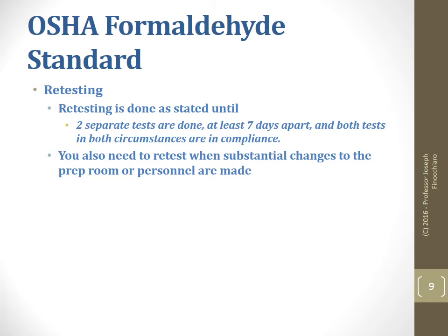When we retest, we must retest once within six months or 12 months respectively. When we have two tests done at least seven days apart — a week apart — and both tests are in compliance, we are now in compliance. So if we do a test on Monday and both the time-weighted average and short-term exposure limit show compliance, that's good, but we're not done. Within that seven-day period we cannot do another test. Seven days later — the following Monday or Tuesday — we do another test, and if both air samples show compliance again, we have satisfied the requirement. We are in compliance and we fixed our problem.